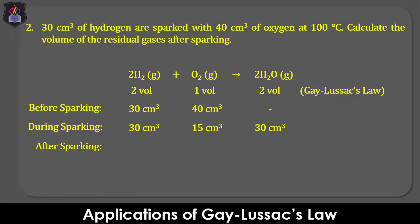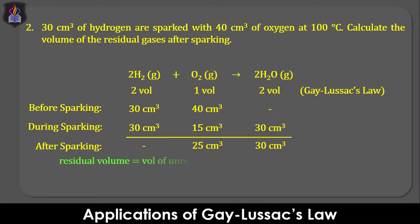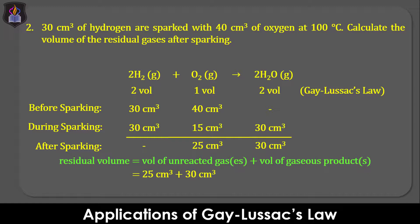After sparking, there will be no hydrogen left, while 40 minus 15, that is 25 cm³ of oxygen, will be left, and there will also be 30 cm³ of steam present. The residual volume is calculated as the sum of the volumes of the unreacted gas or gases and that of the gaseous products formed, if any. So, the volume of the residual gases will be 25 cm³ of unreacted oxygen plus 30 cm³ of steam, which gives us 55 cm³.